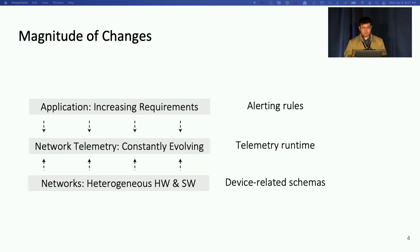So as a quantitative example, we did a measurement study to quantify the magnitude of changes for three specific components, alerting rules, telemetry runtime itself, and device-related schemas. So we found that there are up to 30 code commits and 1,000 lines of code changes per week for each of them. So these frequent and significant changes actually cause a lot of challenges for us to build a reliable telemetry system.